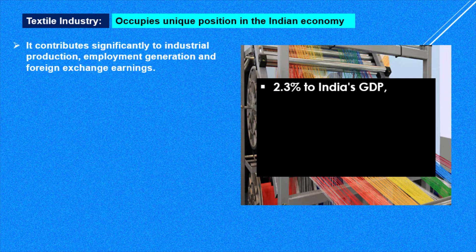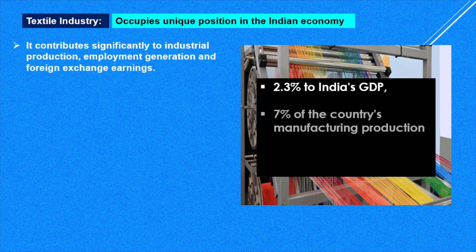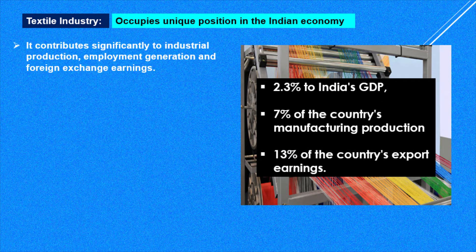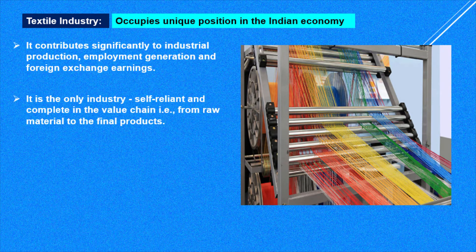The textile industry contributes 7% of the country's manufacturing production and 13% of the country's export earnings. It is the only industry which is completely self-reliant and complete in the value chain, because we are able to produce right from raw material — that is cotton — to the final product, completely within our country.